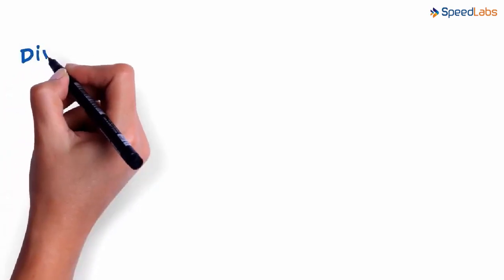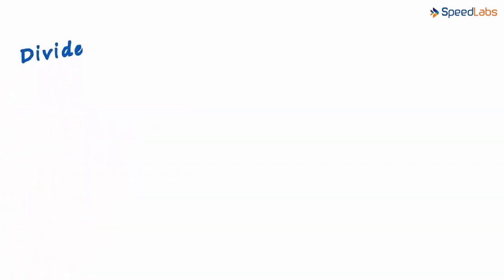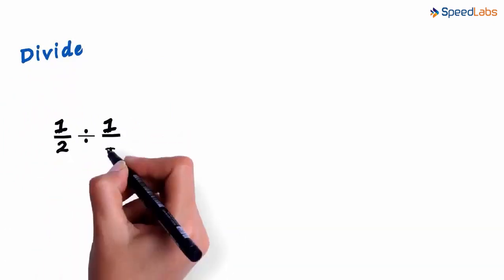In this video, we will see how we divide two rational numbers. Let's try to divide one divided by two with one divided by four.